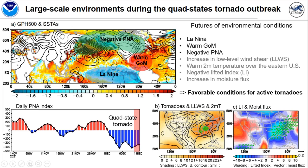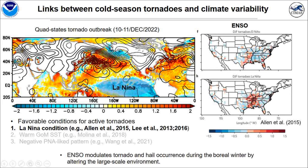In this figure, the shading is the low-level wind shear and the black contours are 2-meter temperature. The green contours are tornado genesis during the cold-state tornado outbreak. Due to the large-scale conditions, low-level wind shear and 2-meter temperature increased over the eastern U.S. Moreover, the lifted index over the eastern U.S. shows a strong negative value, meaning increased atmospheric instability. Also, the vertically integrated moisture flux increased over the eastern U.S.